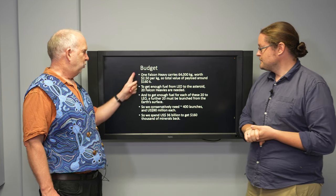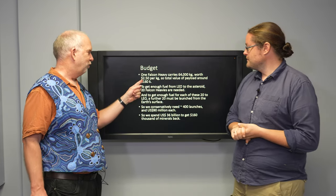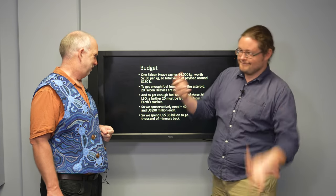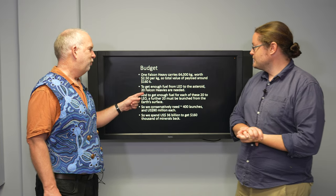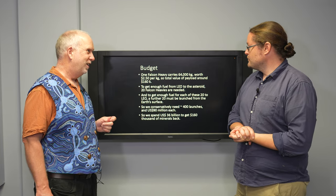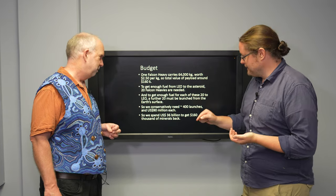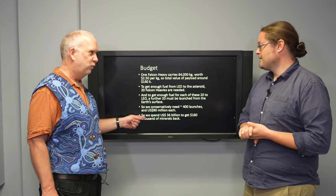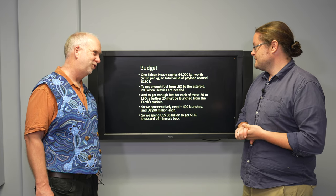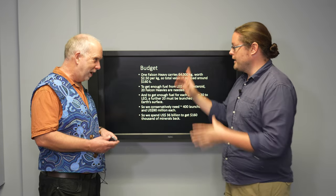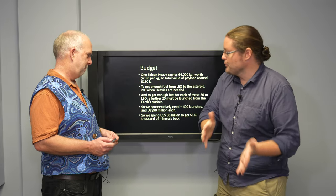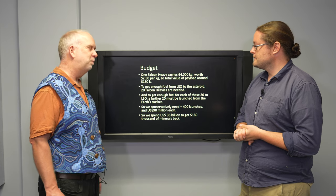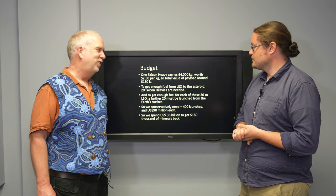So let's do the maths. One Falcon Heavy carries 64 tons, $2.50 per kilogram. That means you get $160,000. Now you're going to need 20 Falcon Heavies from low Earth orbit to get enough fuel to get the one back. And for each of those 20, you're going to need another 20. So you're going to need 20 times 20, so roughly 400 launches to get the one load of minerals back. So $90 million a launch. That means it's going to cost you about $36 billion to make $160,000.